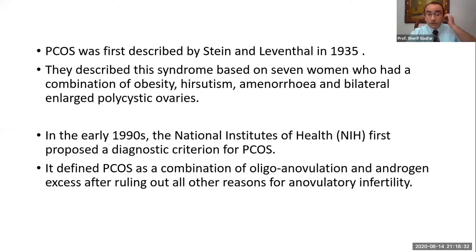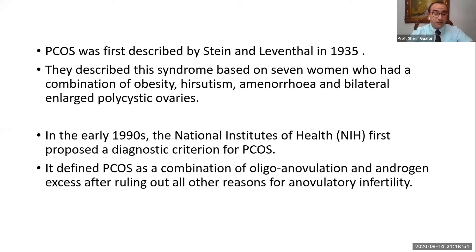In the early 1990s, the National Institute of Health first proposed a diagnostic criteria for PCOS. It defined PCOS as a combination of oligo-anovulation in addition to androgen excess, after ruling out other causes for anovulatory infertility and for hyperandrogenism. However, the polycystic ovarian morphology was not one of their criteria.